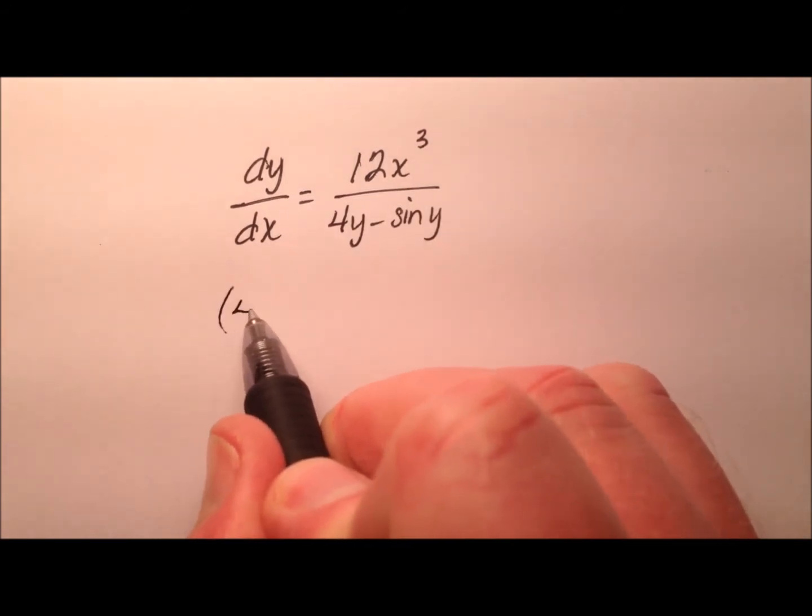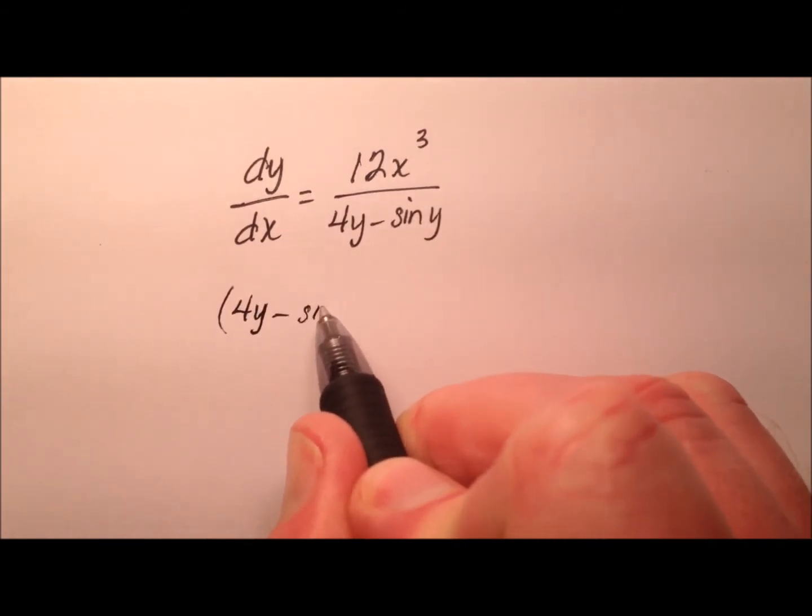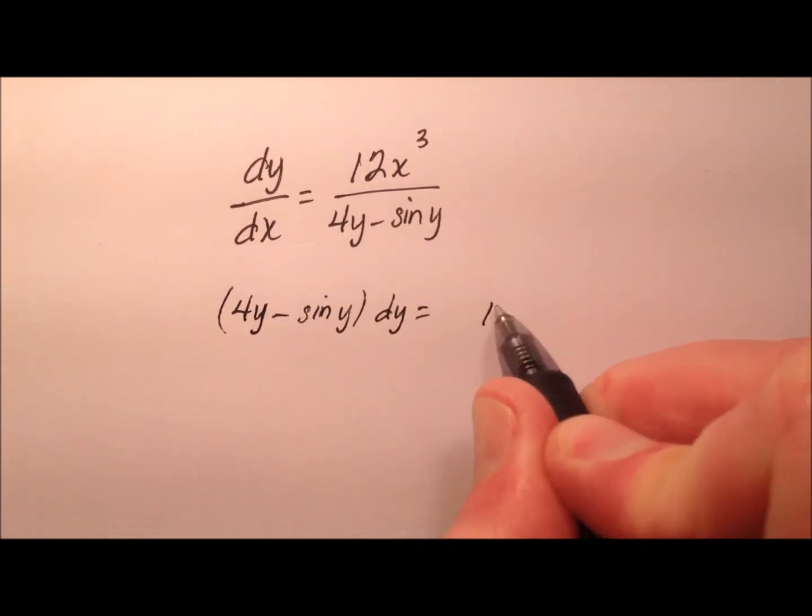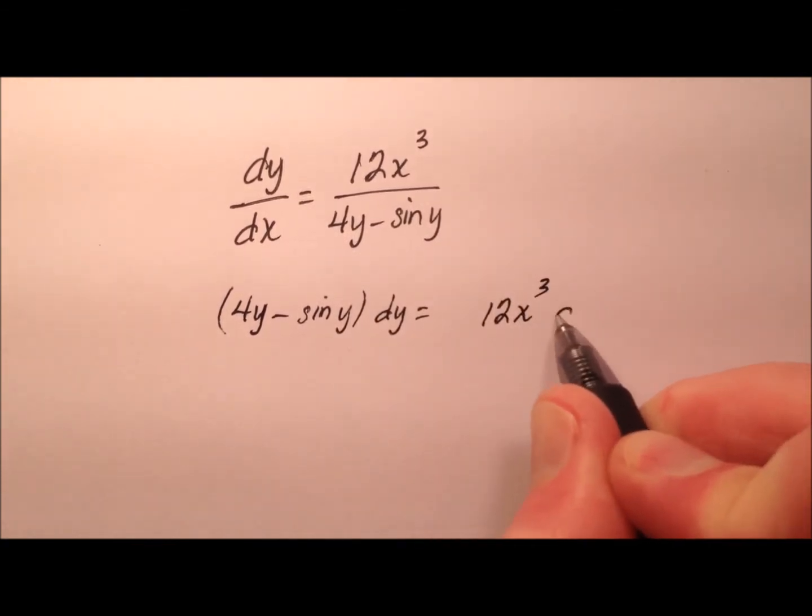So I'll have 4y minus the sine of y dy equals 12x cubed dx.